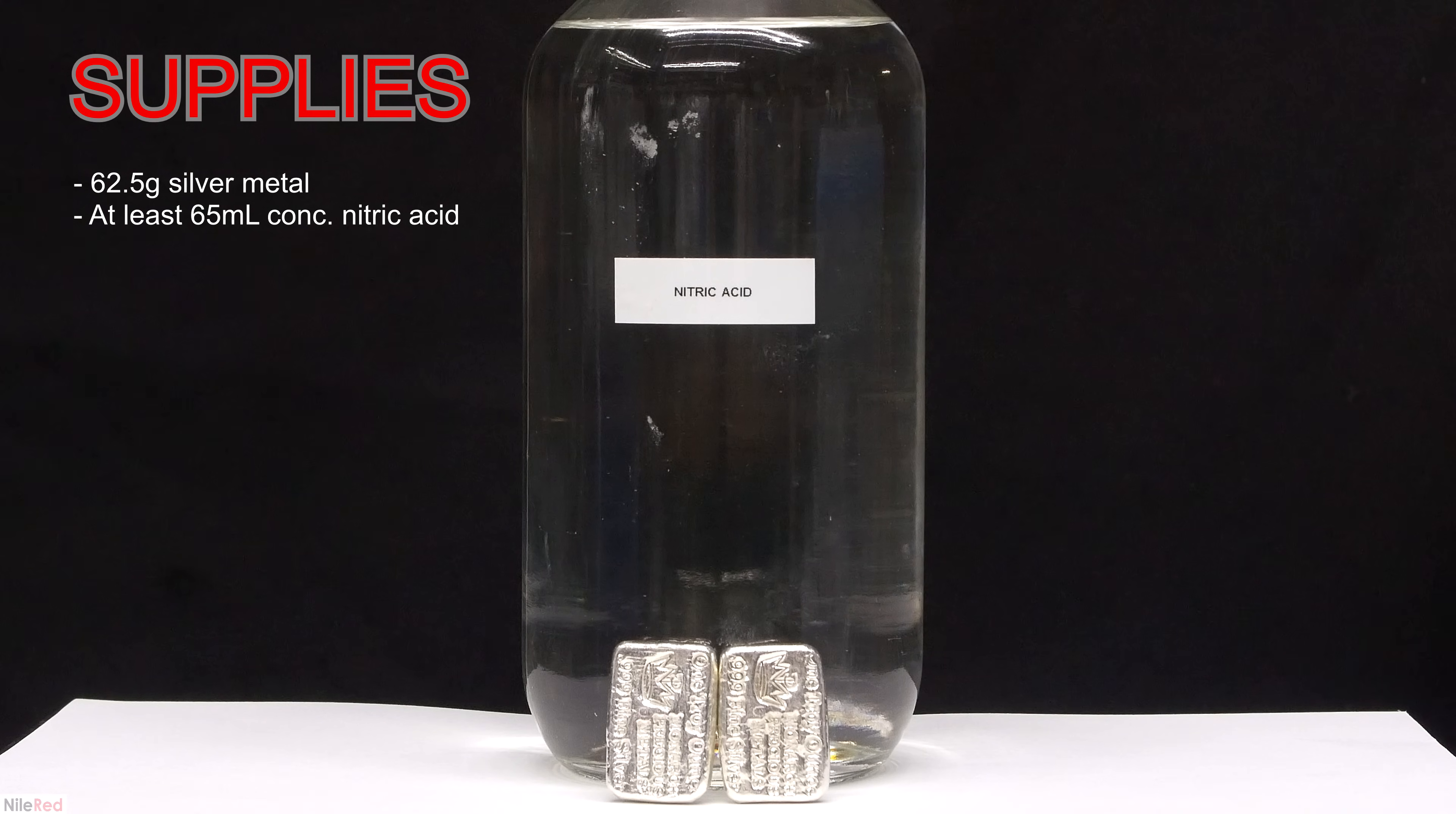In terms of chemicals, all we need for this preparation is silver metal and some concentrated nitric acid. Both of the silver pieces you see here weigh about 31.25 grams, which is a little bit above a troy ounce. For the nitric acid, I found a decent amount to use was a little bit more than a milliliter per gram of silver. So to react the 62.5 grams of silver, I used about 65 milliliters of the nitric acid.